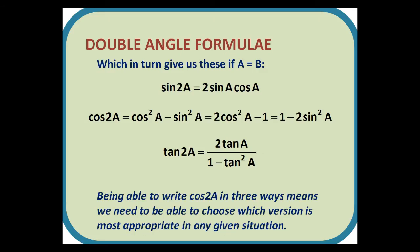Double angle formulae. We can use the compound angle formulae. If we replace A and B with both A's, we have sin 2A = 2 sin A cos A. Cos 2A is cos²A - sin²A, but could also be written as 2cos²A - 1 and 1 - 2sin²A. And tan 2A is 2tan A/(1 - tan²A). Being able to write cos 2A in three ways means we need to be able to choose which version is most appropriate in any given situation.